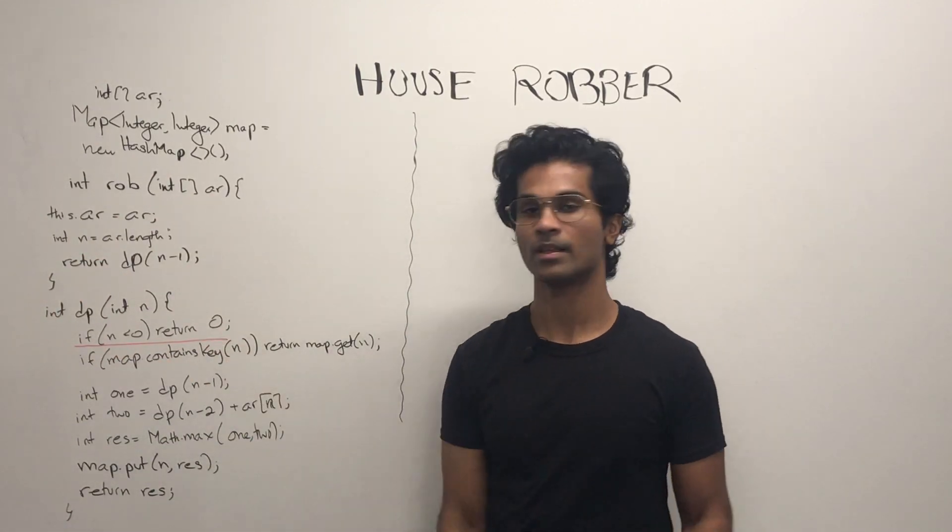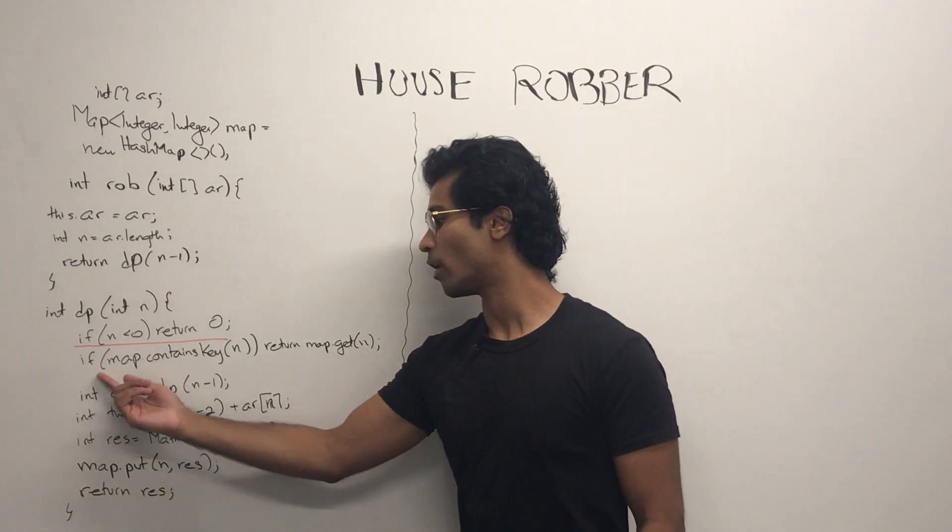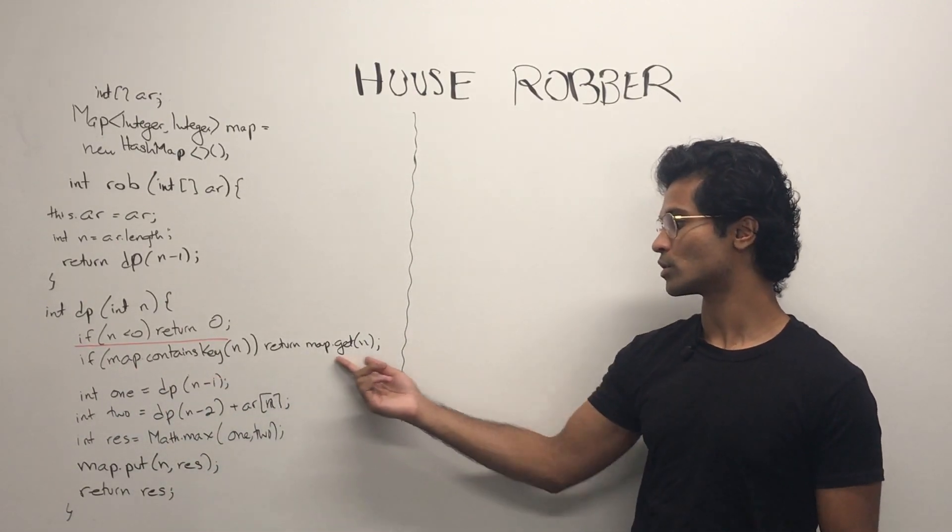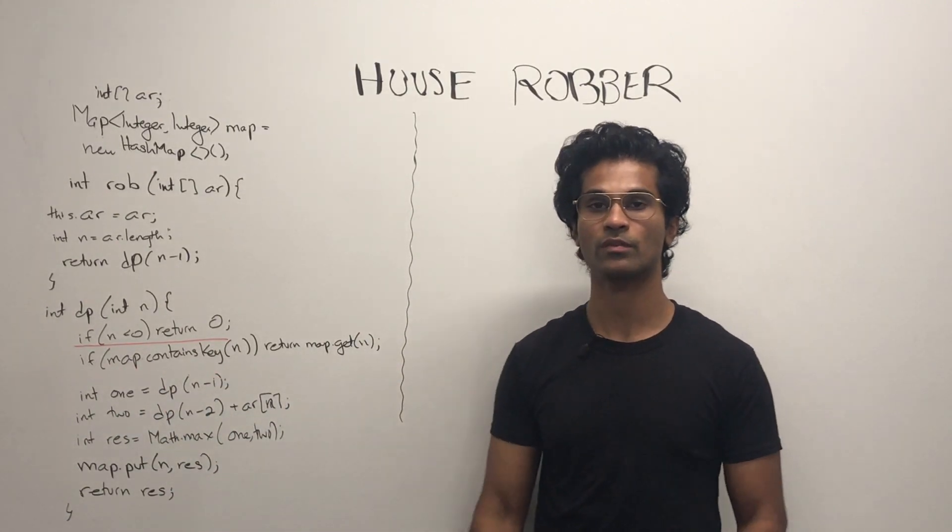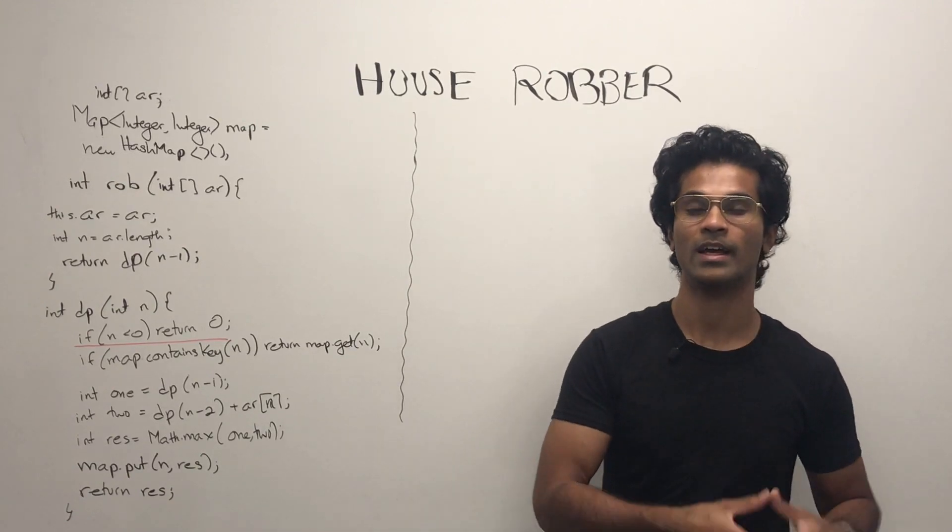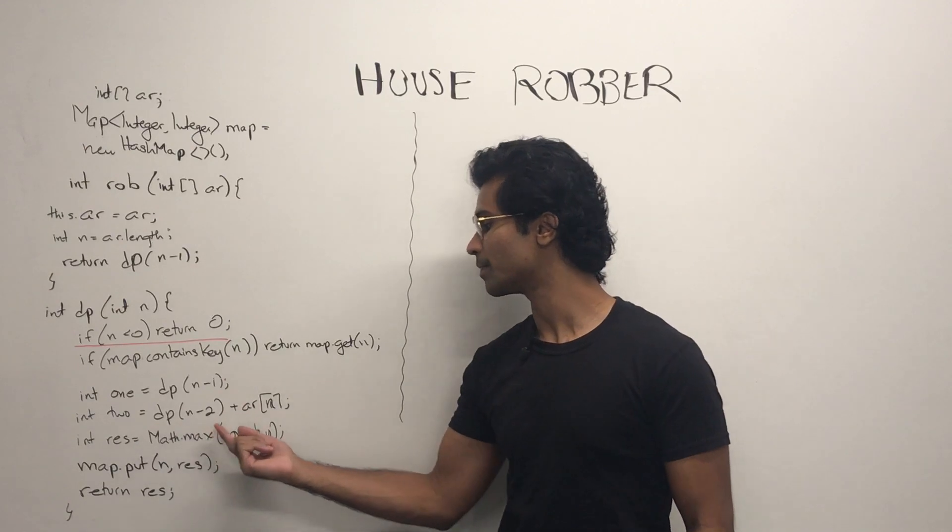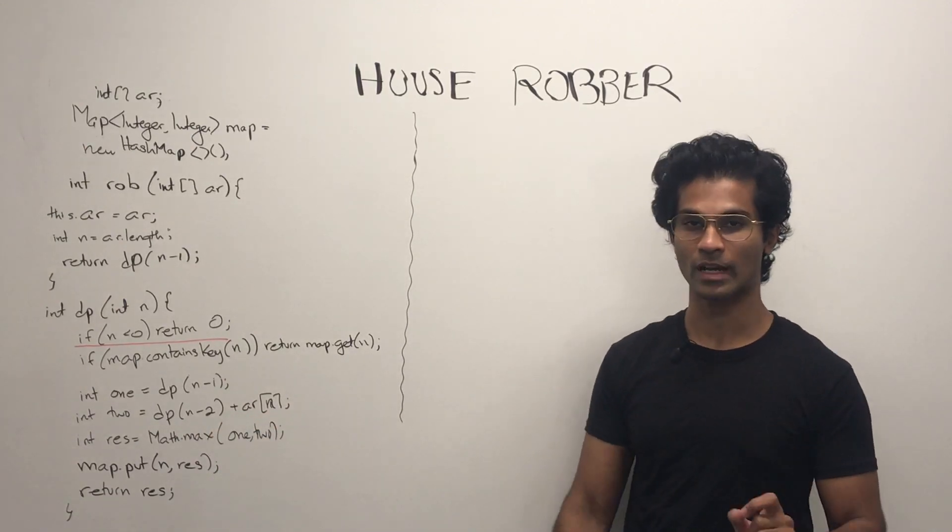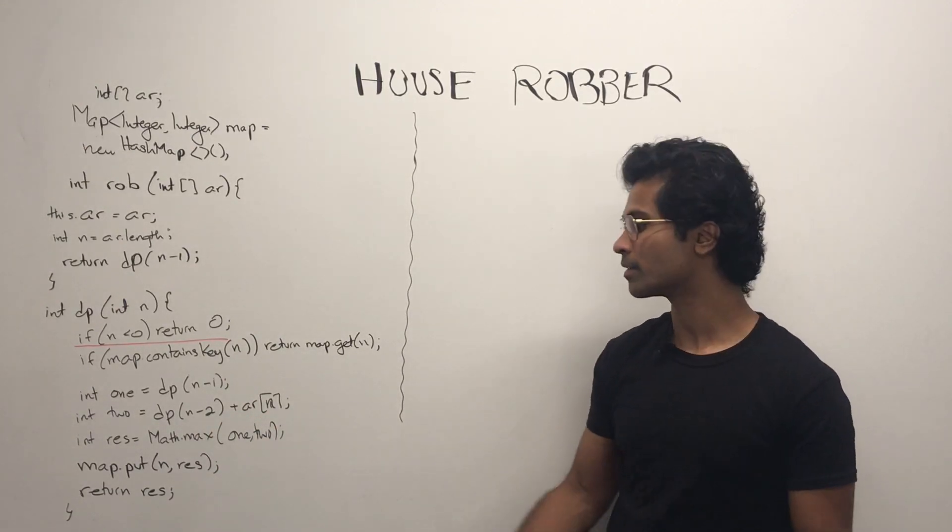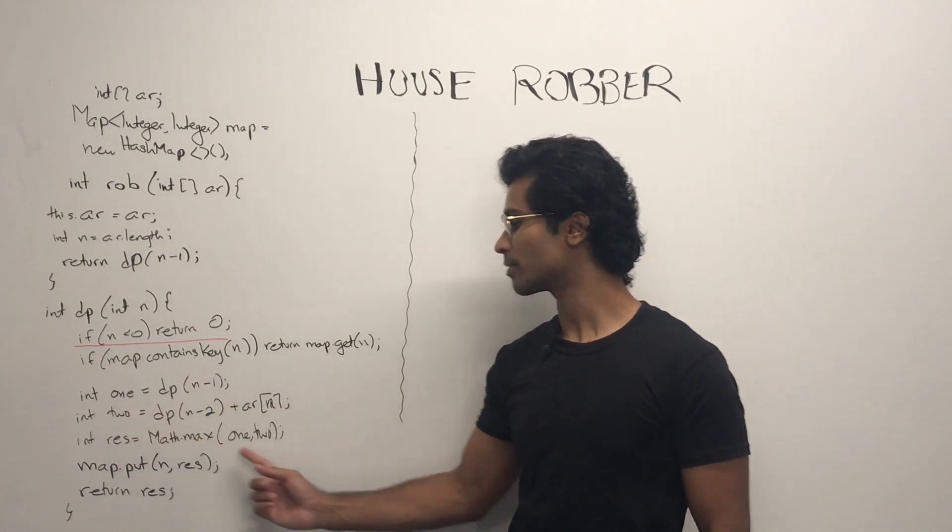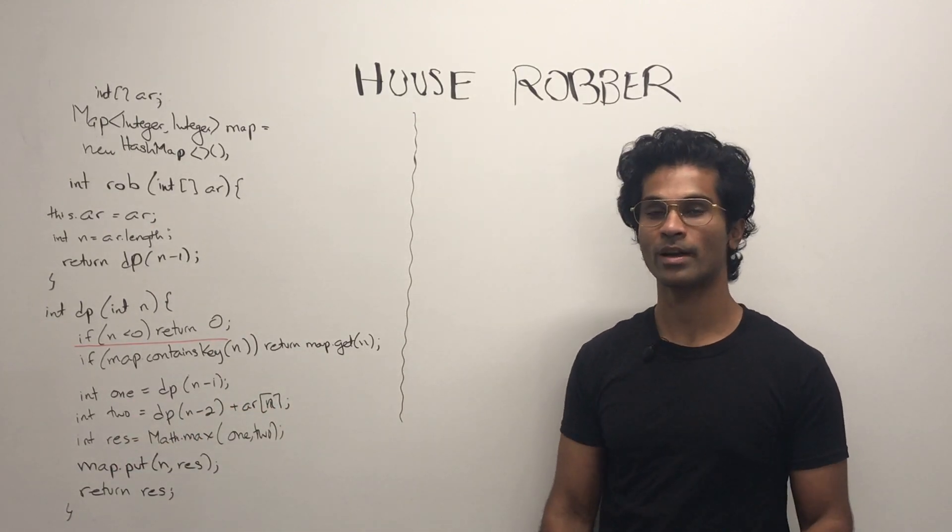So here's our base case. First we check our cache. Have I already calculated this? If so, just return it. Otherwise, recursively call dp of i minus 1 and dp of i minus 2. And then get the value if we decide to take the current value at n. We calculate the max, we put it in our map, and we return.